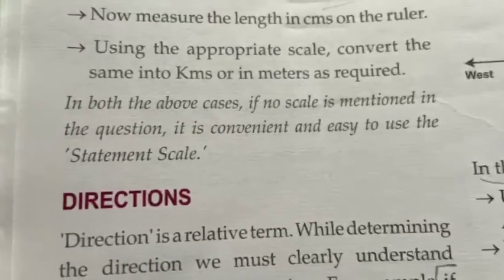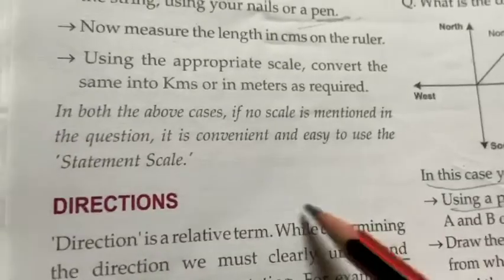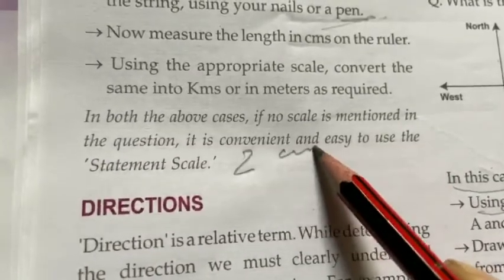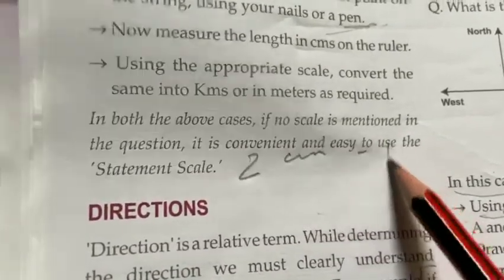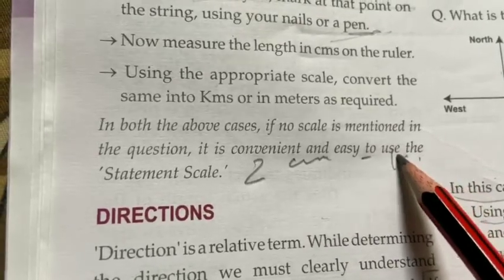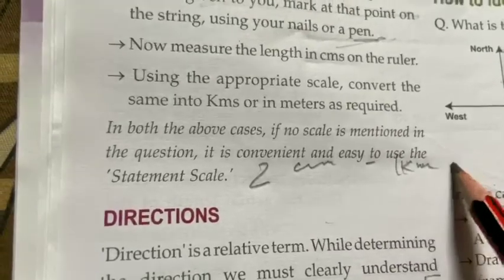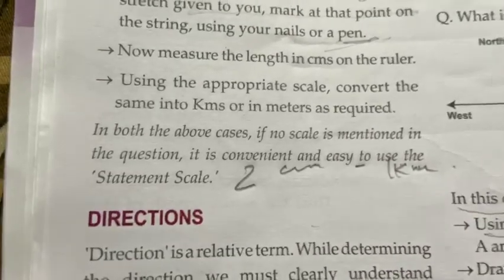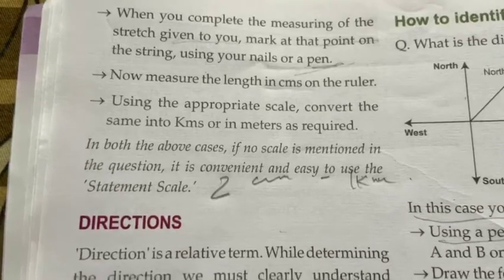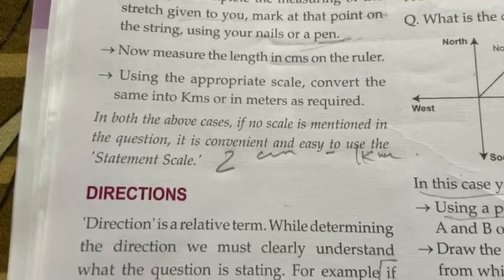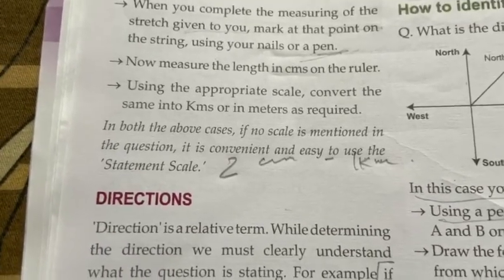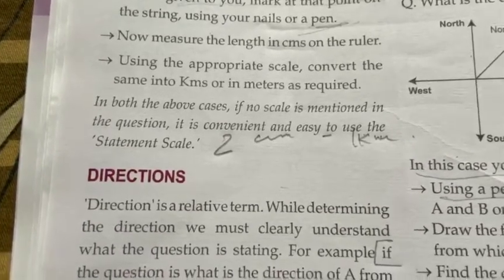The statement scale means, for example, 2 centimeters equals 1 kilometer. So this is our section on measuring distances. Now we are going to a very important part, which is directions.